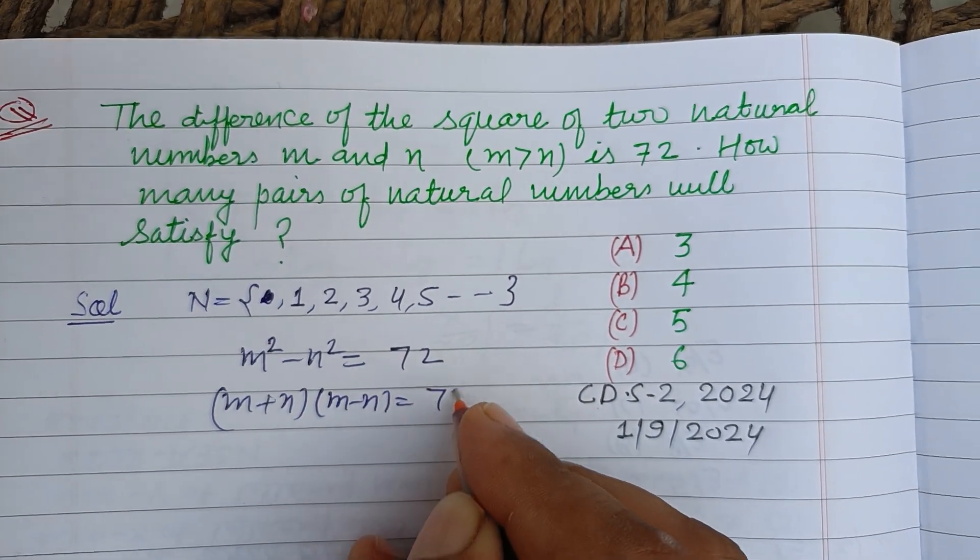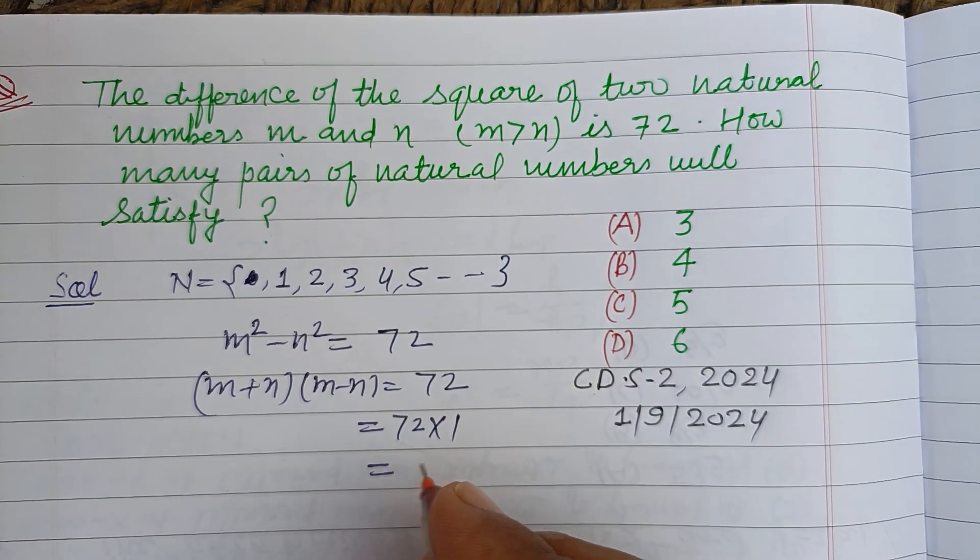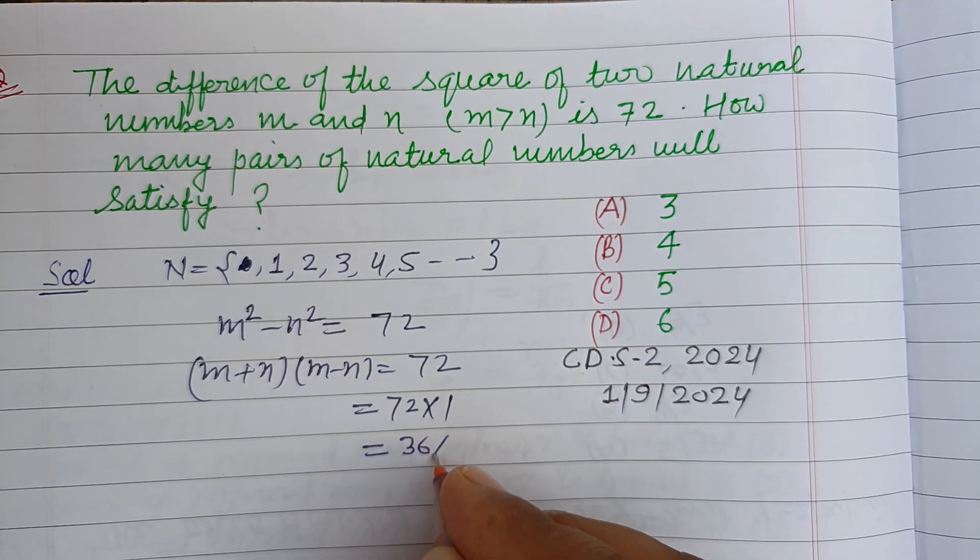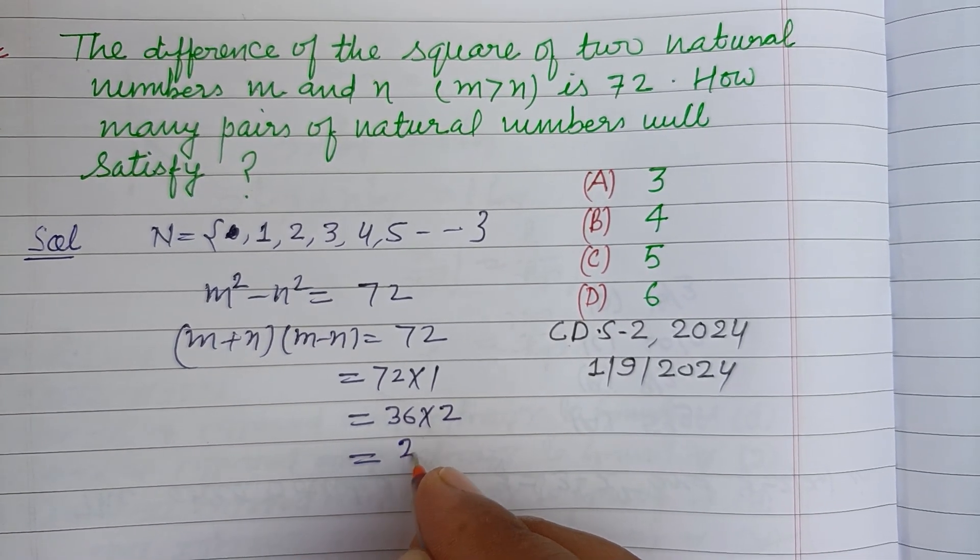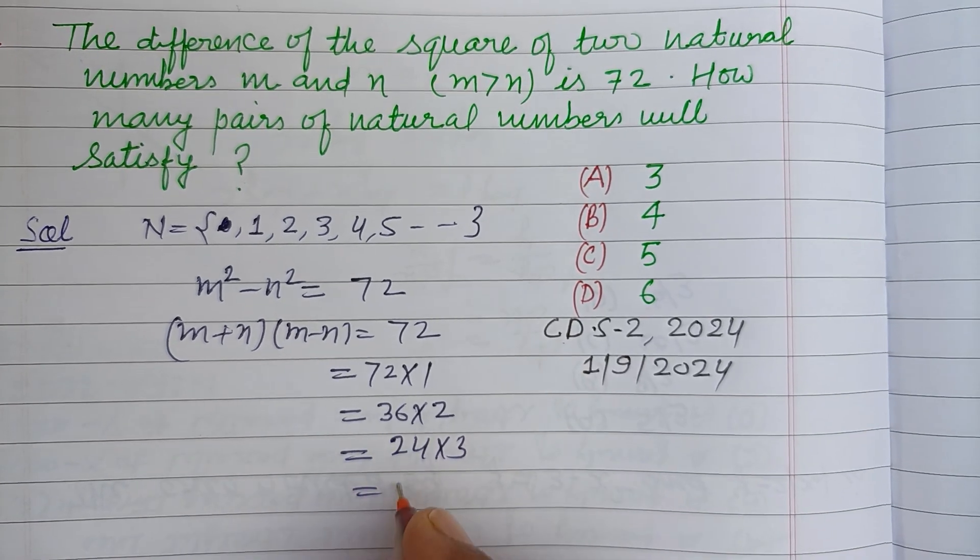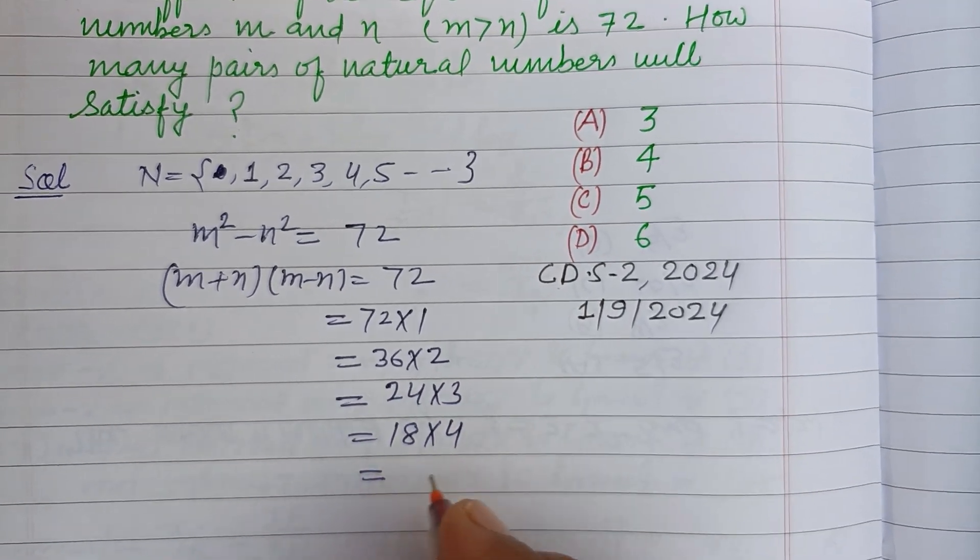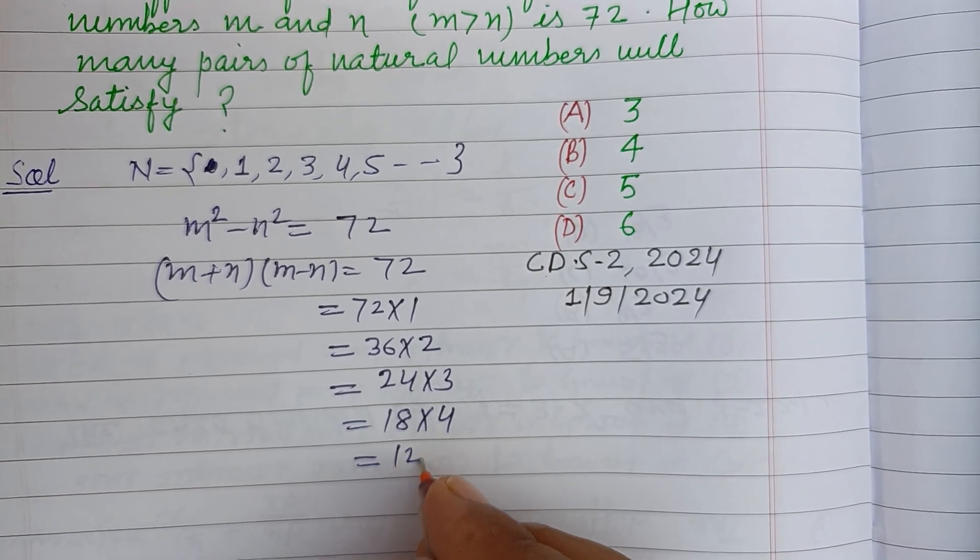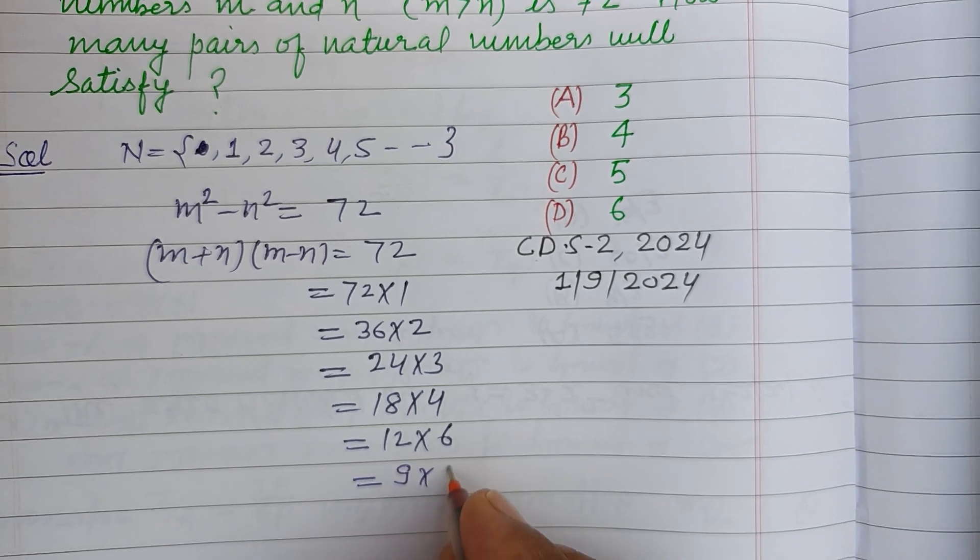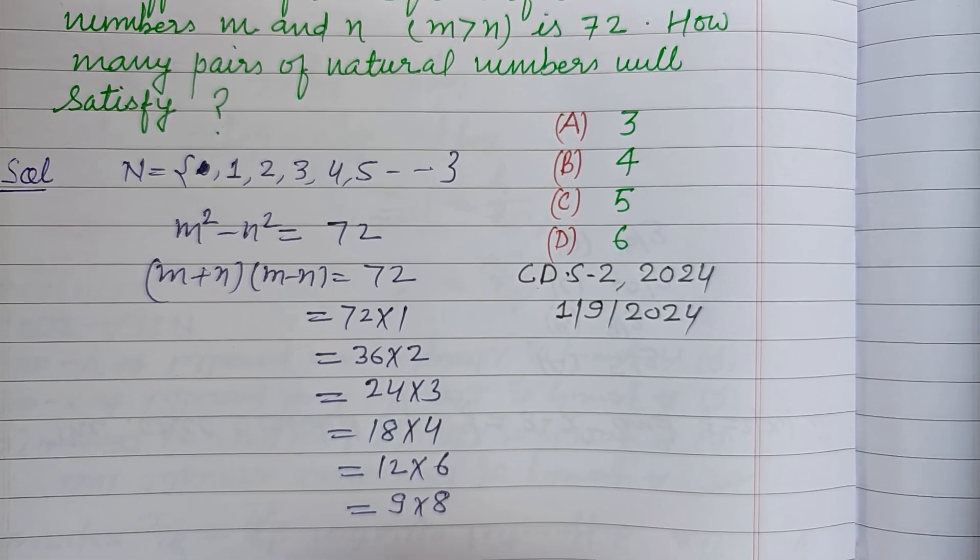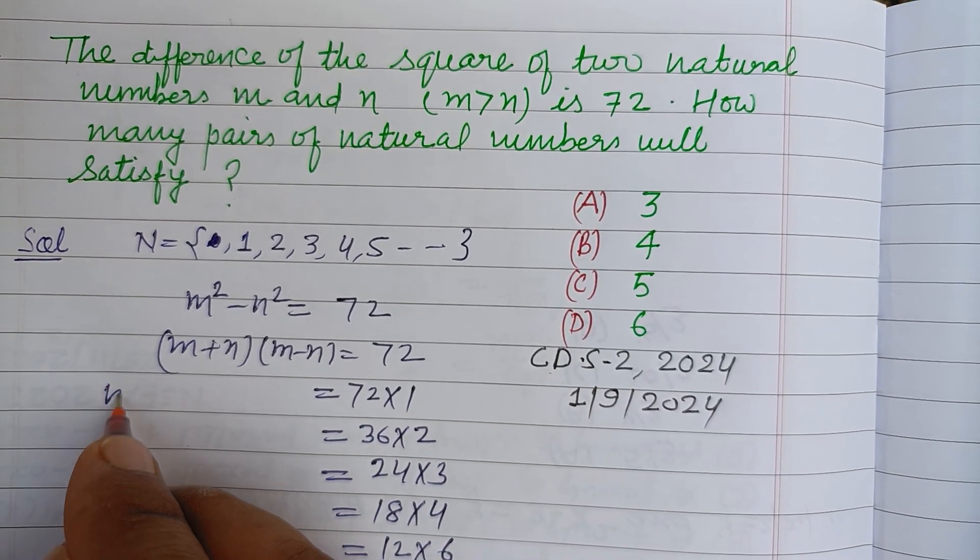So possible factor pairs are 72 into 1, here 36 into 2, here 24 into 3, here 18 into 4, here 12 into 6, here 9 into 8.